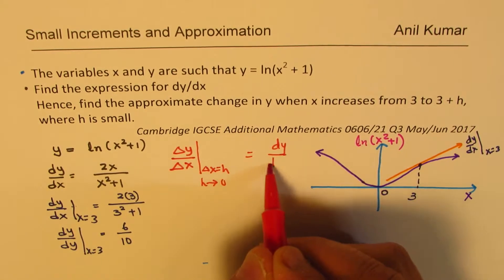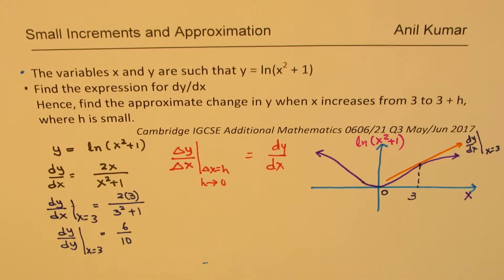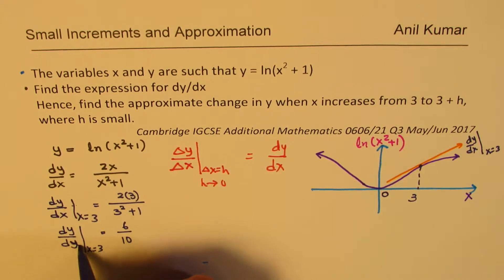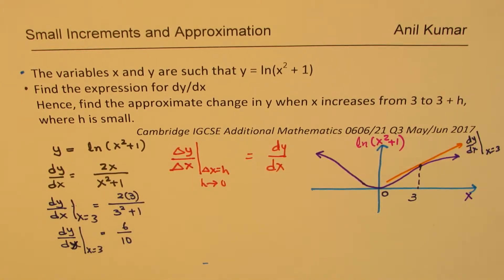From definition we know this should be dy/dx when x is approaching 0. We already have dy/dx at x equals 3, which is 6 over 10. You could simplify this; anyway, we'll leave it like this.